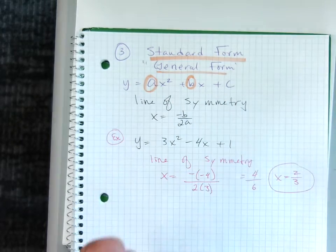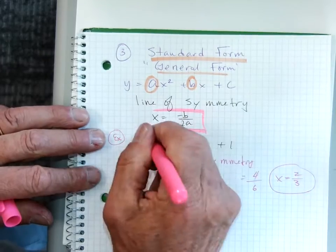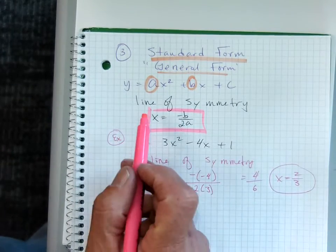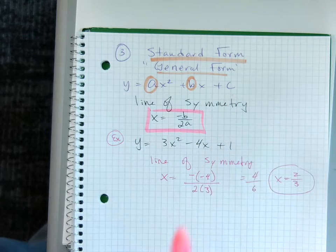If it comes in this form, then again the line of symmetry comes back to an old equation that we learned in geometry. We use this negative b over two a, where a is this number, b is this number, and c is this number. Not the x's, just the number.